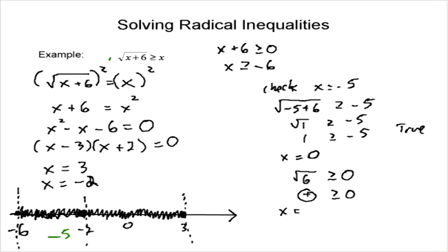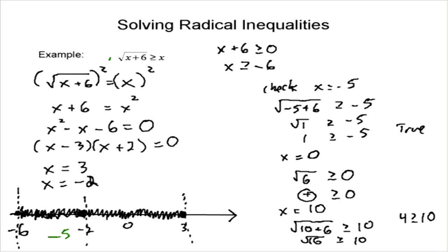Now we're going to check a value greater than 3. The number 10 is a good choice since it makes a perfect square. Checking x equals 10: square root of (10 plus 6) greater than or equal to 10. Square root of 16 equals 4. Is 4 greater than or equal to 10? Definitely not — this is a false statement, so we're not going to include those values.